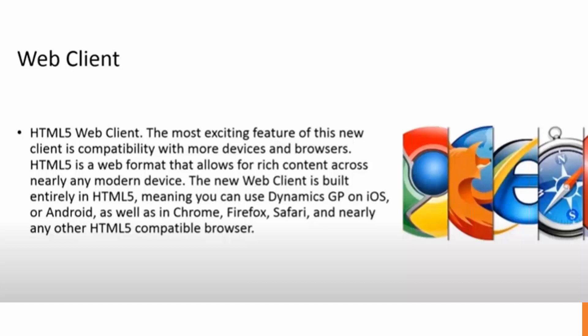The web client first came out with GP version 2013 and initially it was a little clunky — it was slow, and the few people that tried it weren't that crazy about it. But with the newer versions of GP they've really enhanced the web client. It's now built on HTML5, so it works with most browsers — Safari, Firefox, Chrome — and you can browse from any type of device, whether it's a laptop, an Android, or your iPhone.